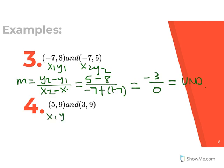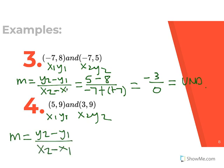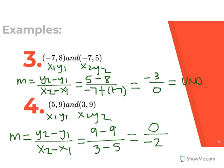For the last example, label x1, y1, x2, y2. m equals y2 minus y1 over x2 minus x1. y2 is 9, minus y1 which is 9, over x2 which is 3, minus x1 which is 5. 9 minus 9 is 0, and 3 minus 5 gives negative 2. This time we have 0 on top — we are able to divide 0 by a number, so in this case we actually have a slope of 0. And that's it for today's notes.